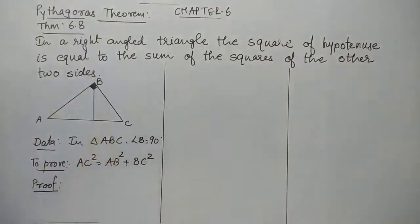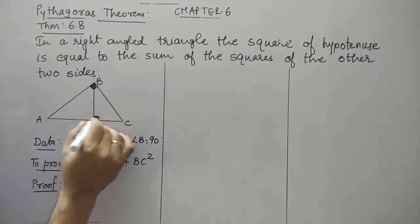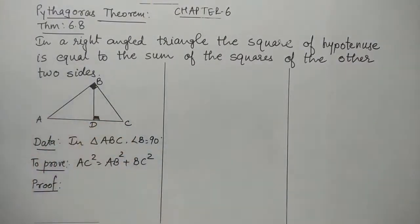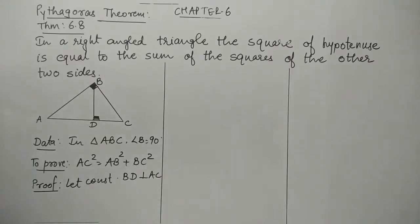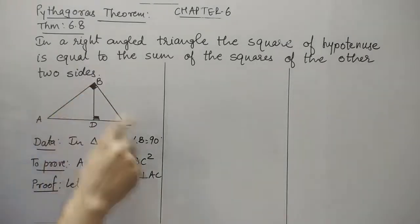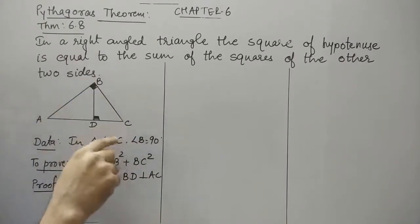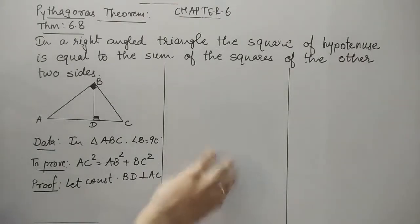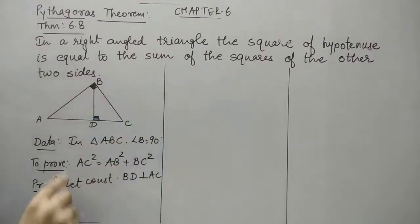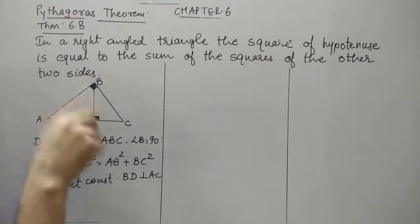Here I have constructed a perpendicular BD on AC. So let us construct BD perpendicular to AC. The previous theorem, that is theorem 6.7, gives us the relation between the similarities of these triangles: the main triangle ABC is similar to ADB, and ABC is similar to CDB. We need to remember why they are similar.